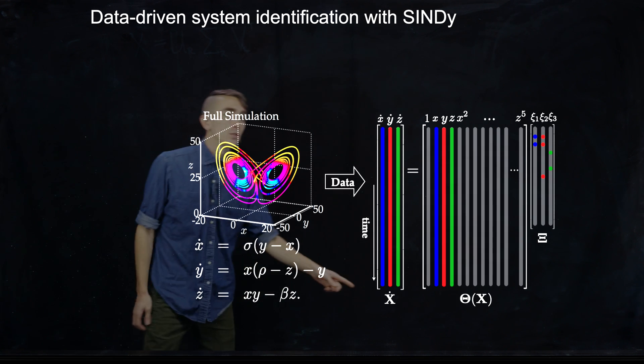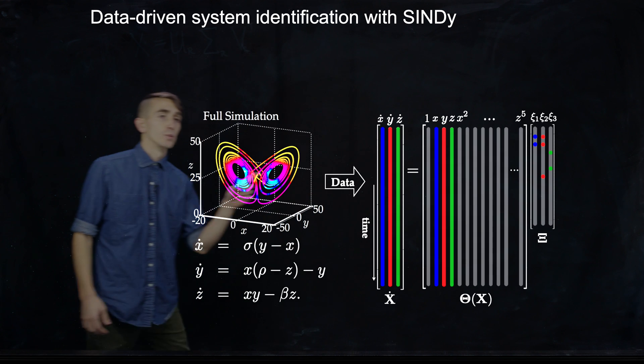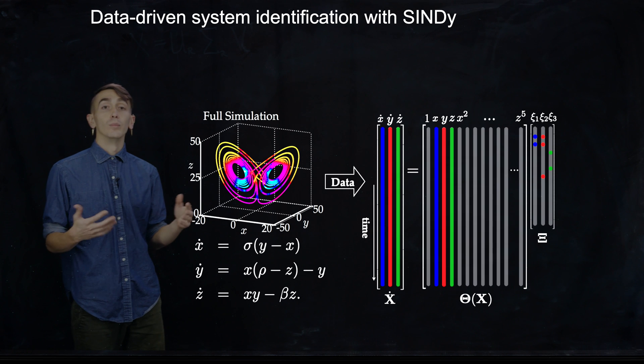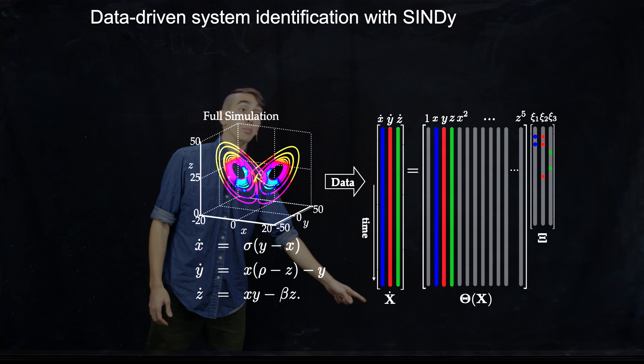And that data matrix is this x dot here. So we've taken the data measurements of x, y, and z from the Lorenz system, differentiated them to get x dot, y dot, z dot, and put that into a big data matrix, big x dot.